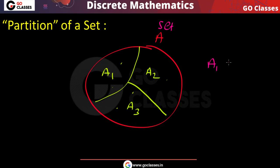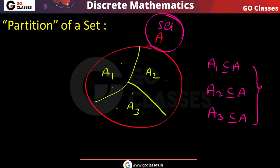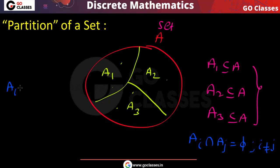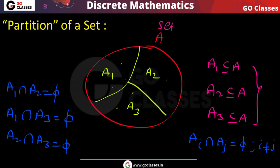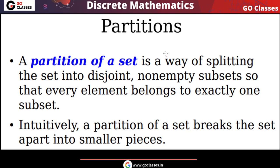Partition of set A means we are dividing A into non-empty disjoint subsets. A1, A2, A3 are each subsets of A, and they are mutually disjoint — Ai ∩ Aj = φ whenever i ≠ j. So A1 ∩ A2 = φ, A1 ∩ A3 = φ, and A2 ∩ A3 = φ. Each subset is non-empty.